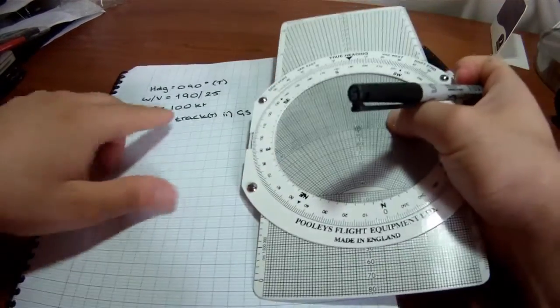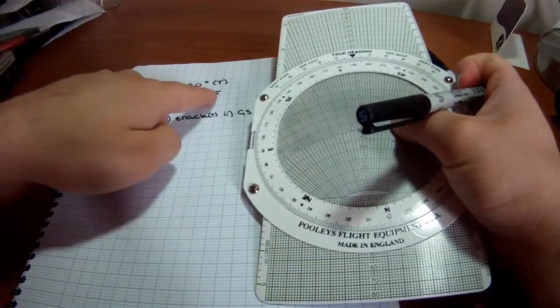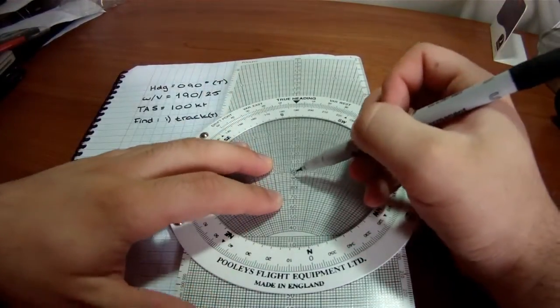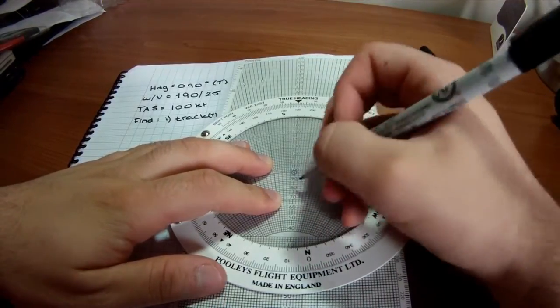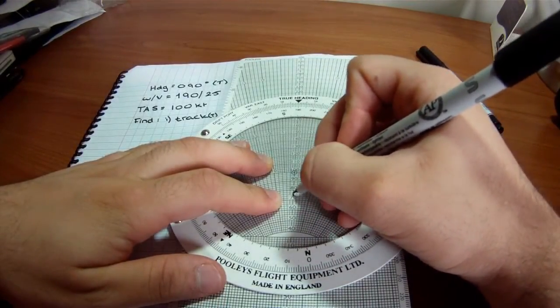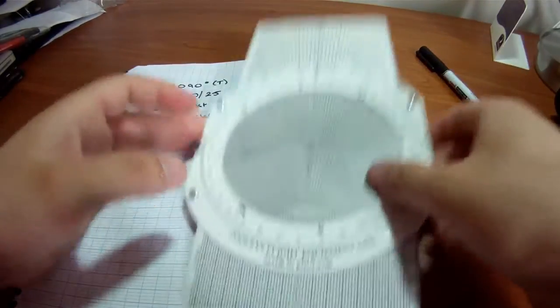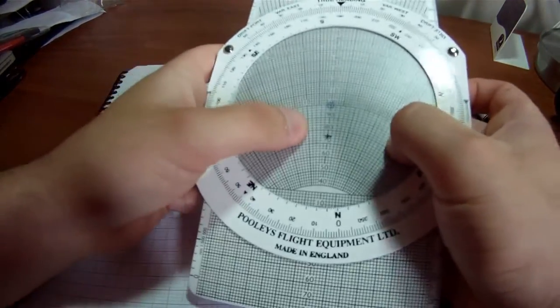So, back to the question. 100 knots, 190, 25 knots. Again, as before, we go under 10 knots, 20 knots, 22, 24, 25. There you go. 25 knots with a very wobbly cross, but that's okay.